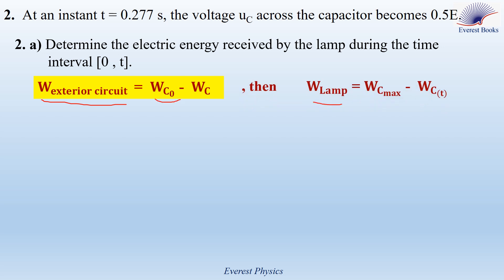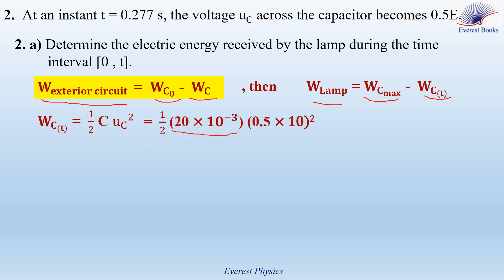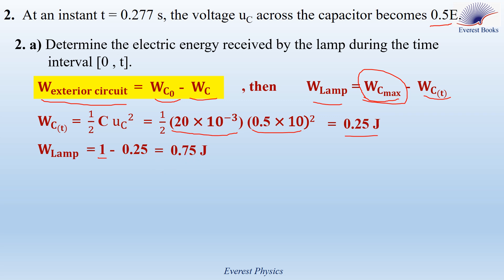The energy received by the lamp equals Wc0 minus Wc, where Wc0 is the maximum energy stored in the capacitor at the beginning of discharging and Wc is the remaining energy in the capacitor at time T. Calculating Wc at time T: Wc = ½·C·Uc² = ½ × (20 × 10⁻³) × (0.5 × 10)² = 0.25 joules. Therefore, W_lamp = Wc_max − Wc = 1 − 0.25 = 0.75 joules.